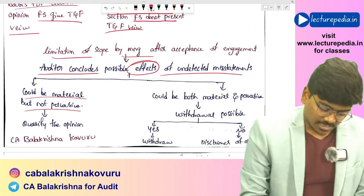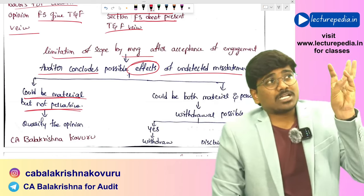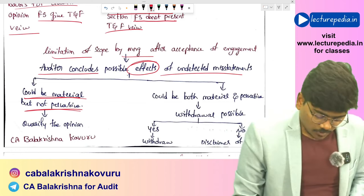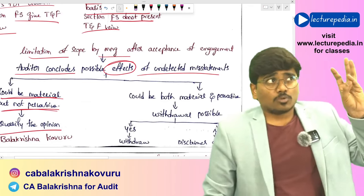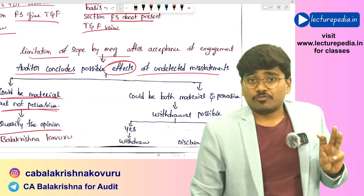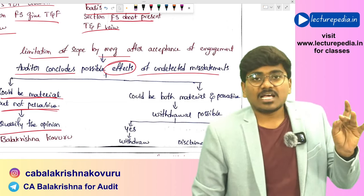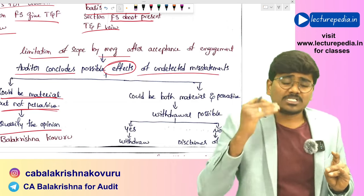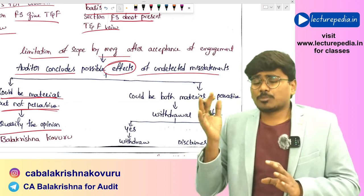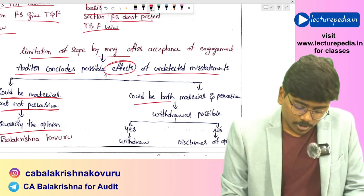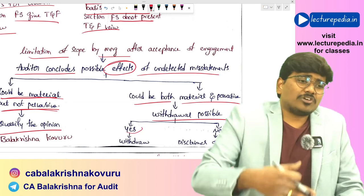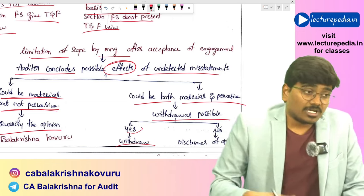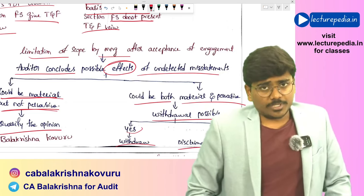If misstatements could be material but not pervasive, give a qualified opinion. If misstatements could be both material and pervasive, first consider whether withdrawal from the engagement is possible. If withdrawal is possible, it is better to withdraw. If withdrawal is not possible as per law or regulation, then disclaim the opinion. Under LODR regulations issued by SEBI (applicable to listed entities only): if the auditor resigns within 45 days from the end of a quarter, they must issue a limited review report for that quarter before resigning; if after 45 days, they must issue limited review reports for that quarter and the next quarter; if limited reviews have been conducted for the first three quarters, the auditor must issue the fourth quarter limited review report and the complete annual audit report before resigning.